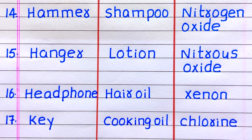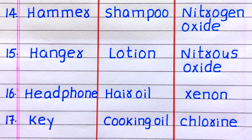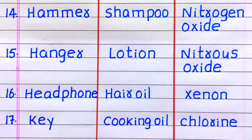Fourteenth example of a solid is hammer, fifteenth hanger, sixteenth headphone, seventeenth key. Fourteenth example of a liquid is shampoo, fifteenth lotion, sixteenth hair oil, seventeenth cooking oil. Fourteenth example of a gas is nitrogen oxide, fifteenth nitrous oxide, sixteenth xenon, seventeenth chlorine.